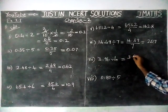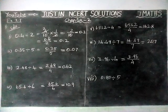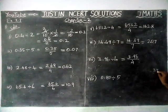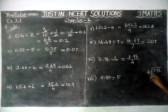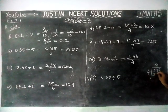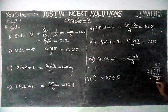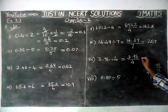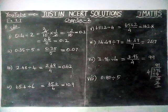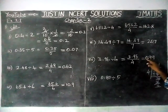Seventh question: 3.96 divided by 4. Treat as 396 divided by 4. 3 cannot be divided by 4, so take 39: 9 fours are 36, remainder 3. Take 36: 9 fours are 36, remainder 0. Answer is 99; with 2 decimal points, the answer is 0.99.